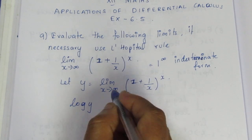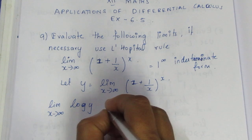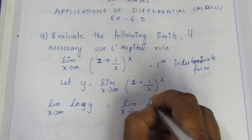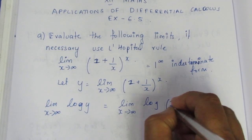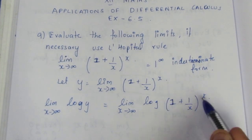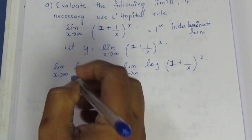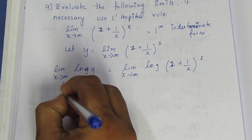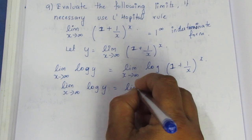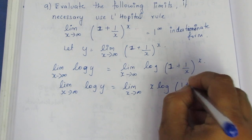Taking log on both sides: log y equals limit x tends to infinity of x times log of 1 plus 1 by x. Now, applying infinity into this expression will give infinity, so this will be in the form infinity times a finite expression — a determinate issue we need to handle.